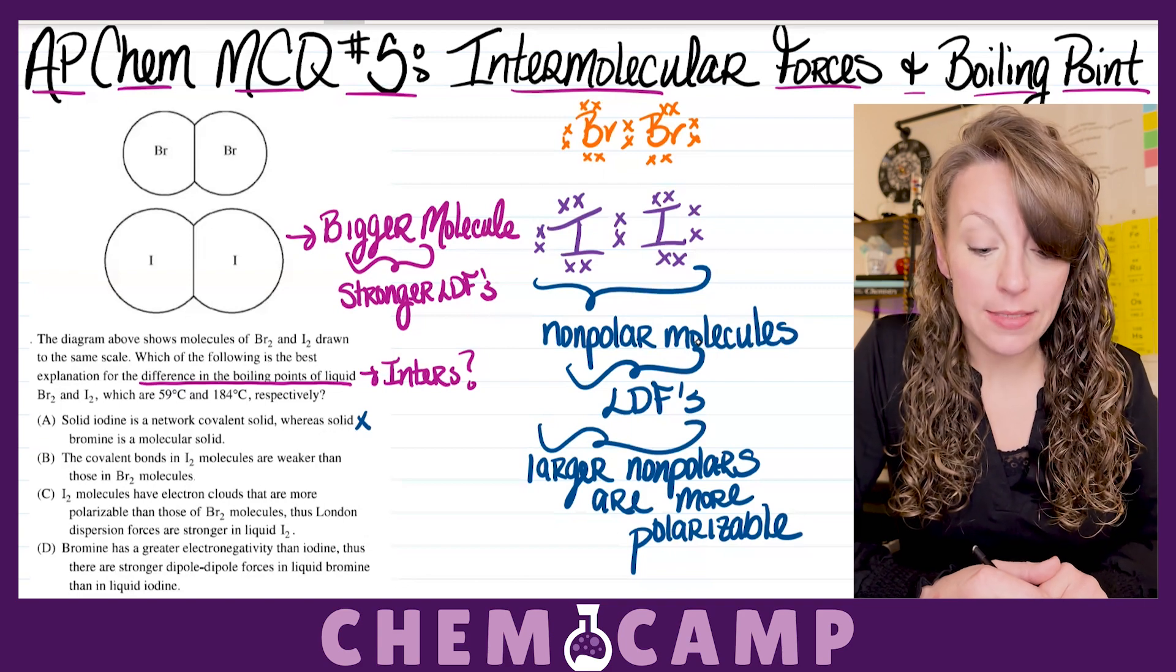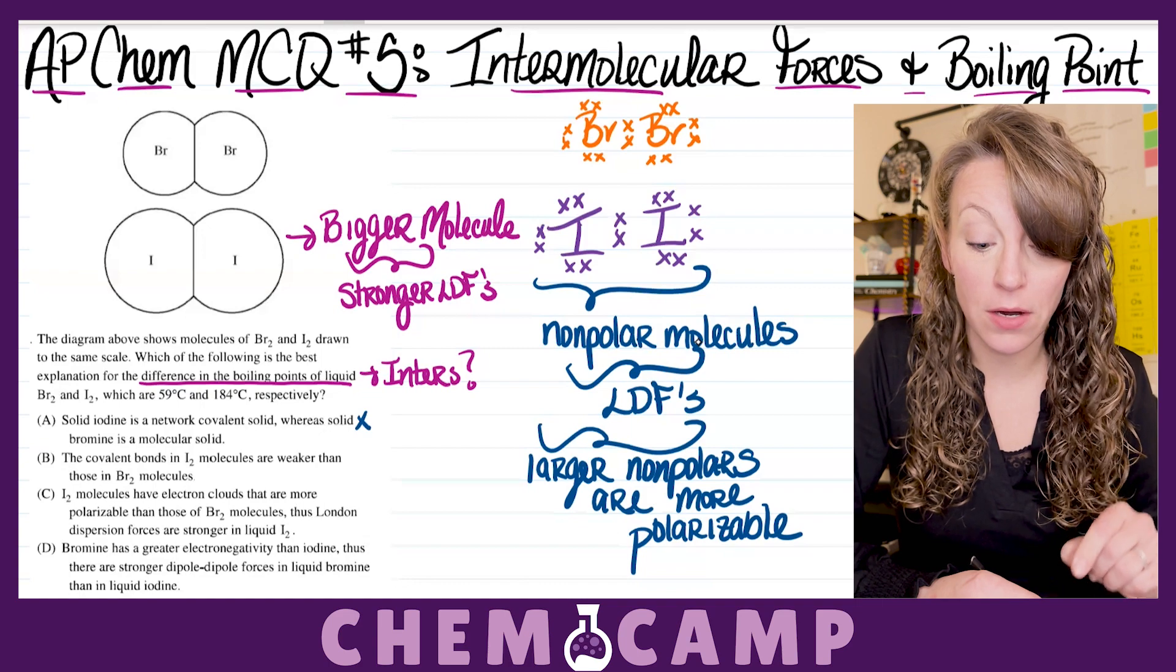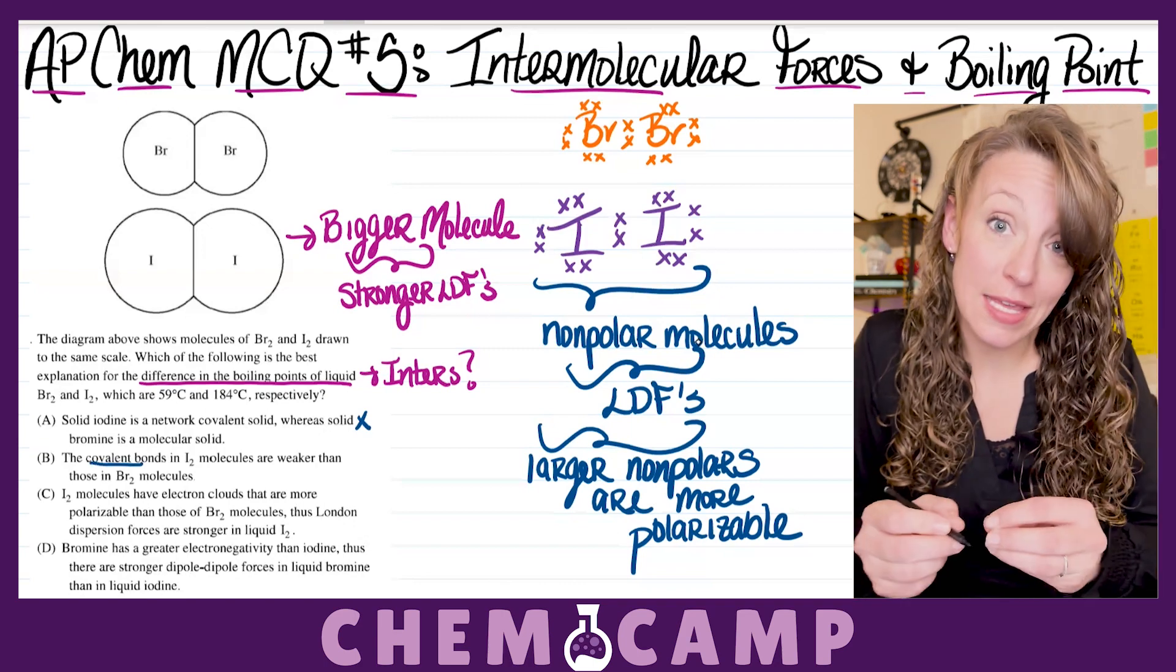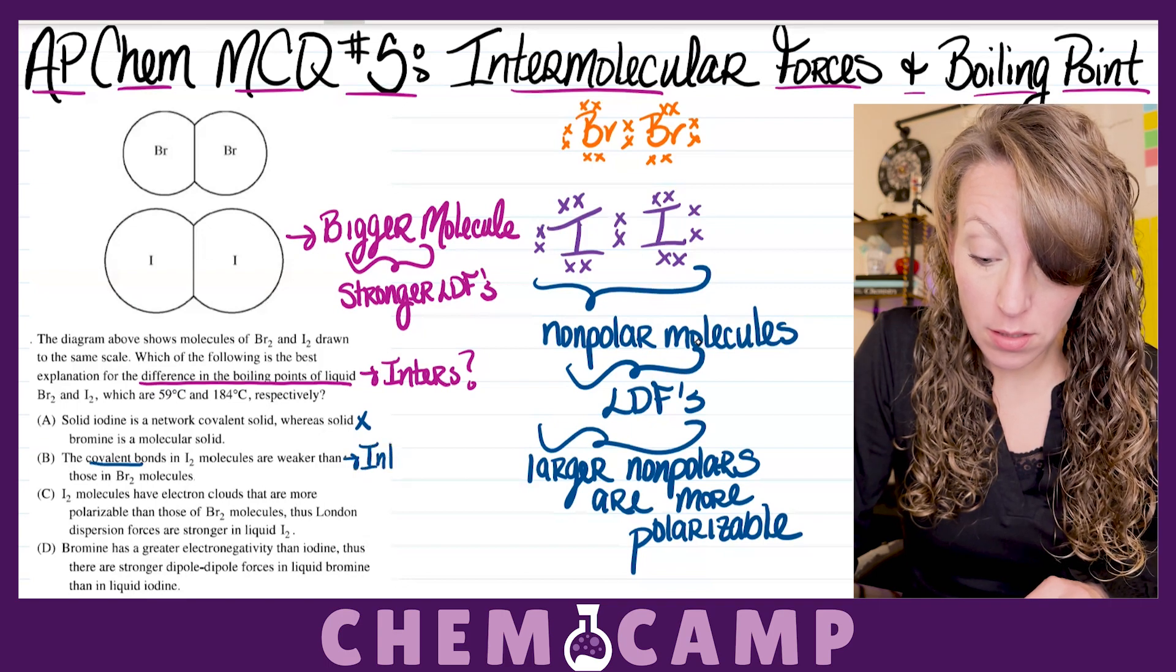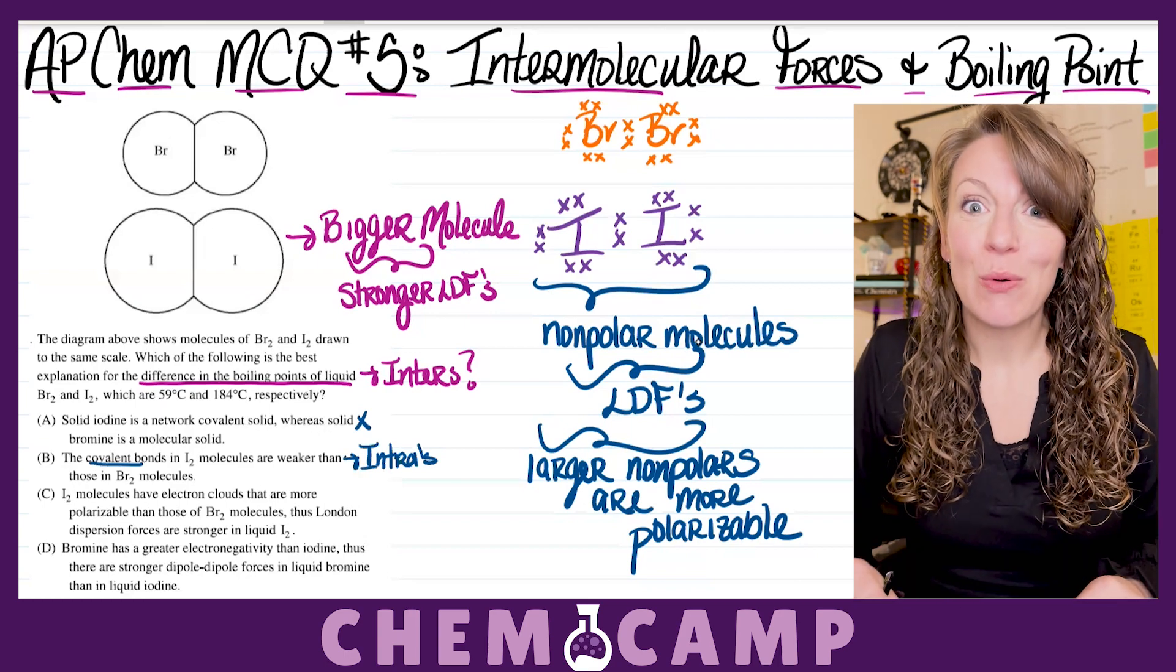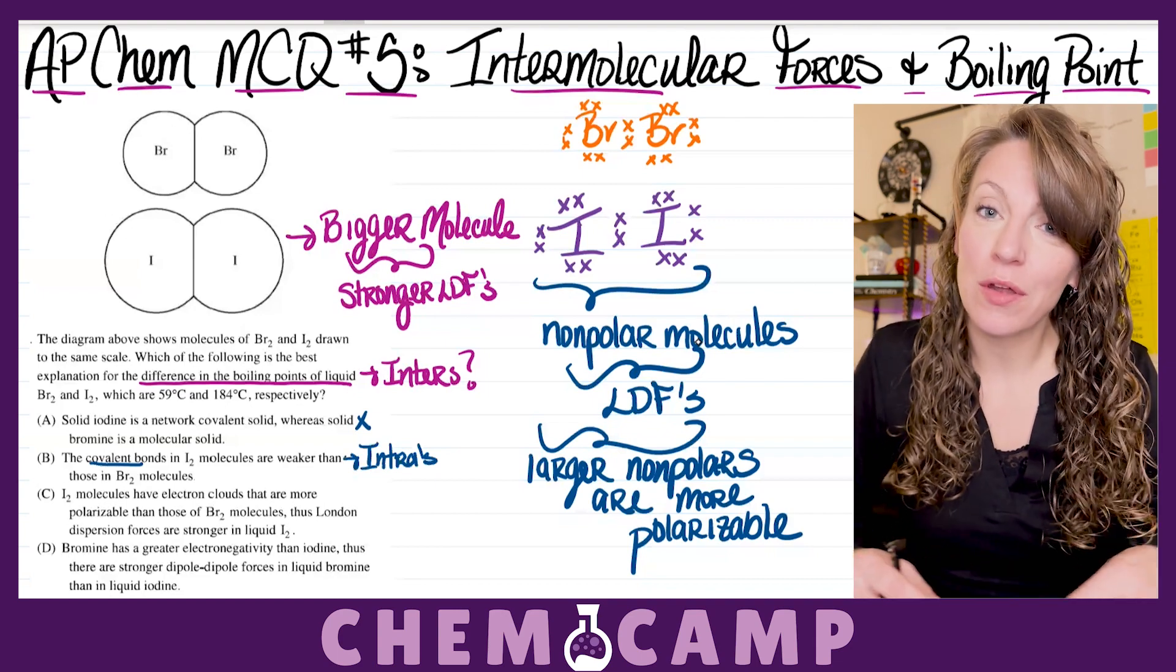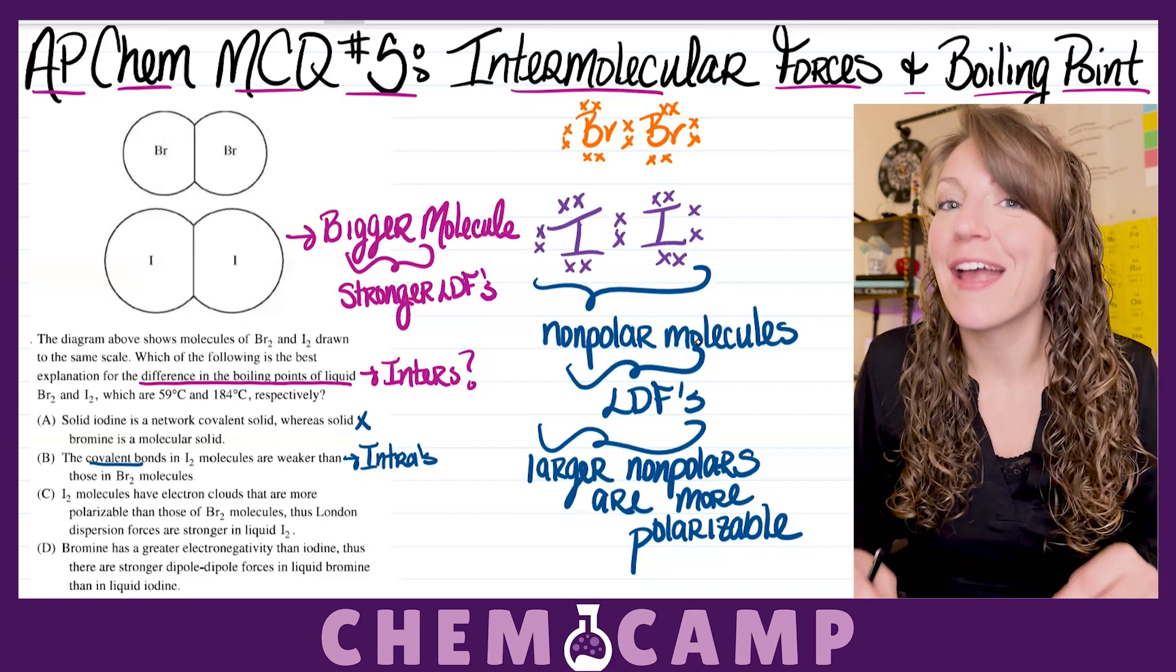In letter B, it states covalent bonds in I2 molecules are weaker than those in Br2 molecules. Well, if they're talking about the covalent bonds within the molecules, they're actually talking about intras. Now, at no point during a boiling point or a melting point are intras ever broken. Those are within the molecule. They're holding the molecule together itself. Those are going to require much more energy.